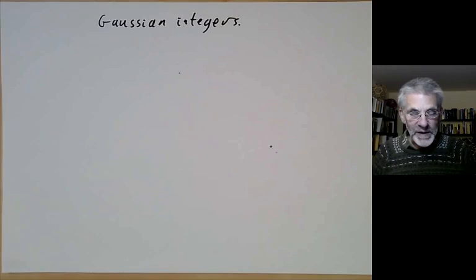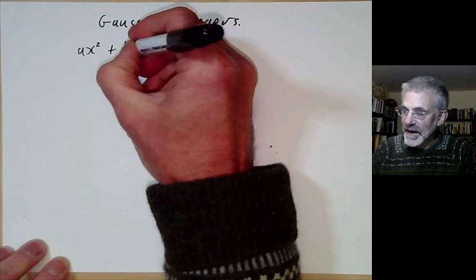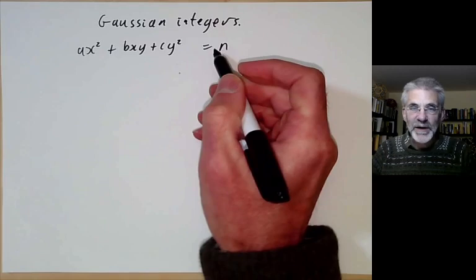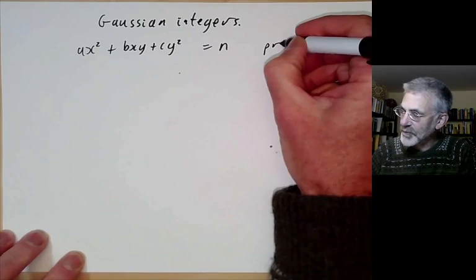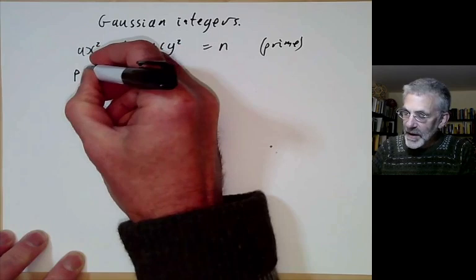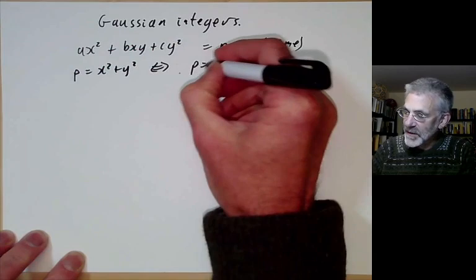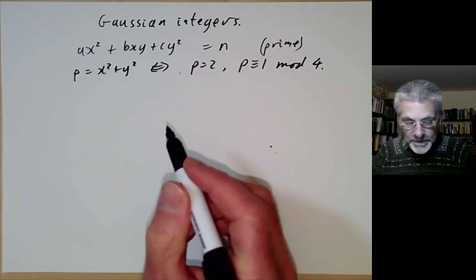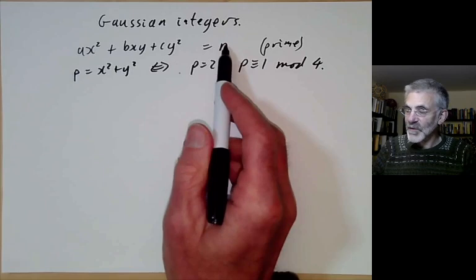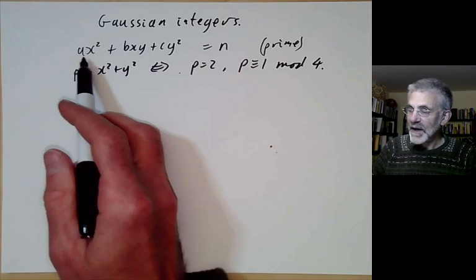In the last few lectures we've been looking at binary quadratic forms ax²+bxy+cy² and considering which numbers n can be represented by them, mostly taking n to be prime. For example, a prime p can be written as x²+y² if and only if p=2 or p≡1 mod 4. Now I want to consider more generally the case where n is not prime, and for simplicity I'll just talk about the form x²+y².